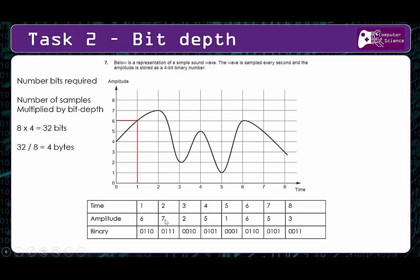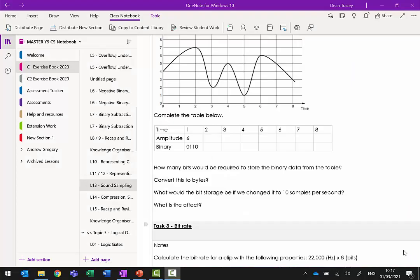The answers for task two are: amplitude values 7, 2, 5, 1, 6, 5, 3, converted into their four-bit binary equivalents. To work out storage: we have 8 lots of 4 bits, giving 32 bits total. Converting to bytes - remembering there are 8 bits in a byte - we divide 32 by 8, and we can store all of this sound information in 4 bytes.